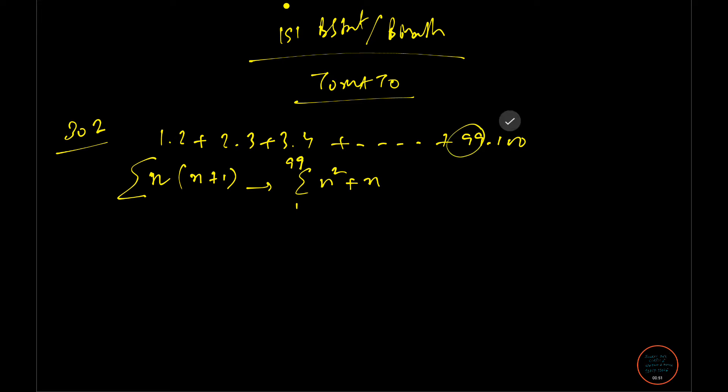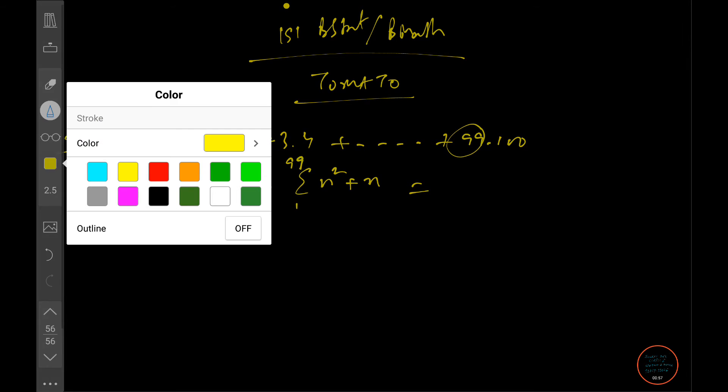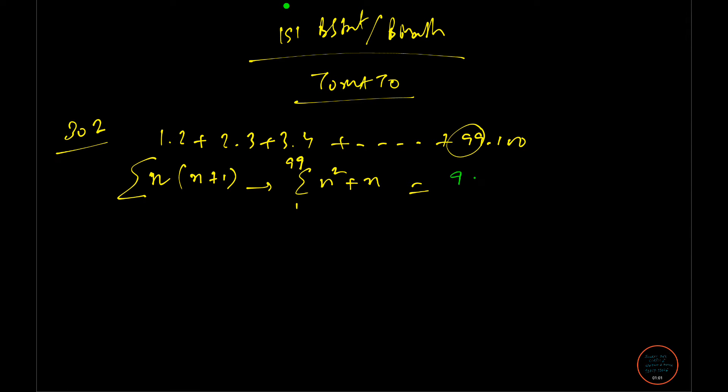Here i goes from 1 to not 100, but 99, because the first term is n. So 99 is the key. The summation of n² from 1 to 99 uses the formula: n(2n+1)(n+1)/6. The formula is 99×100×199/6 and the other part is 99×100/2.